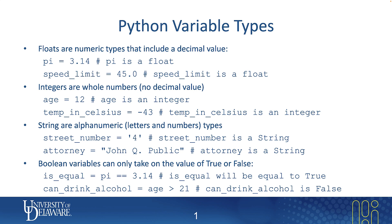In the second category, we're dealing with integers. Integers are whole numbers and are commonly used. In the first example, age is set to 12 — not 12.0 — so Python will consider age to be an integer or whole number. In the second example, temp_in_celsius has the value negative 43. Negative values can also be integers, so temp_in_celsius is also considered an integer.